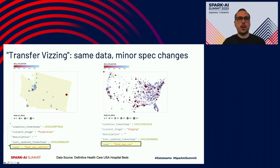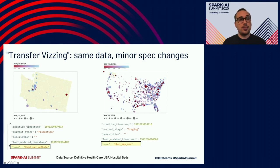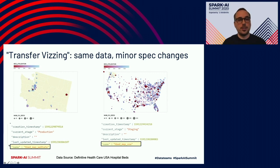Here we are transferring our intuition about hospital beds and their availability from Washington state to the entire country. This is great because a non-expert would be able to make that substitution and hopefully have the same sort of intuitions that an expert would have, but now within a different context.